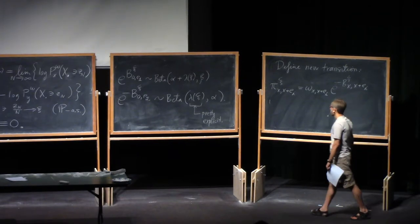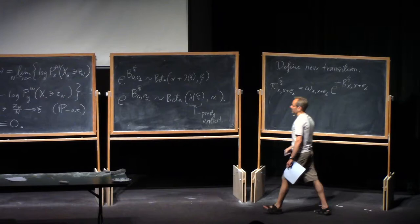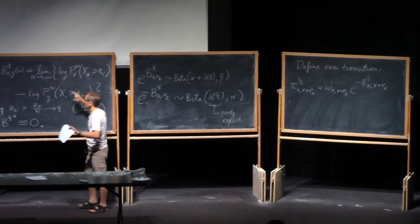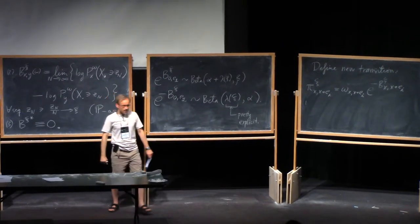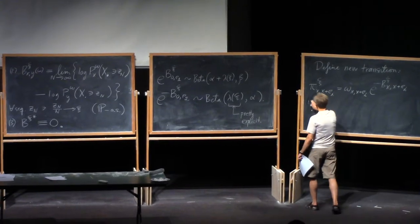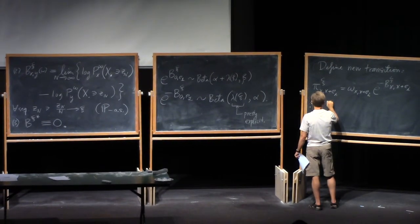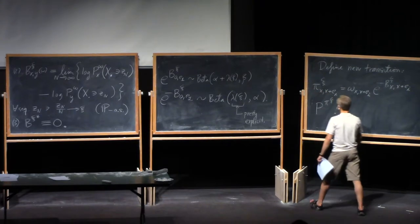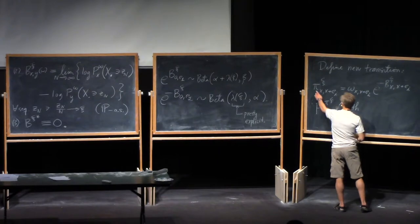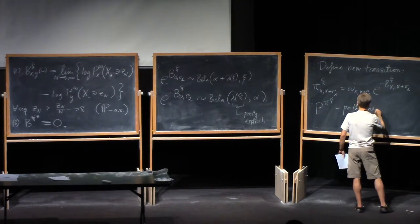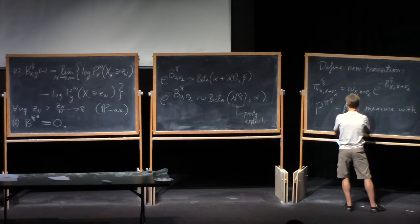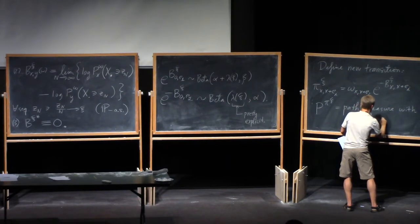But now you see, it's of course highly correlated, because these b guys, as you see, they depend very globally on the environment, right? All the way to the asymptotics. So this is now a very correlated transition probability. And let me denote by capital P of pi xi the path measure that obeys these transitions. So path measure with transitions pi of xi.